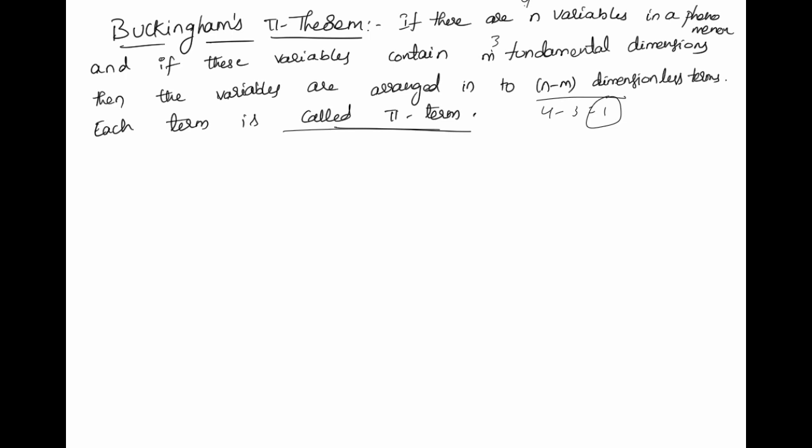After writing the pi terms, we compare the arbitrary constant values on both sides. Since a pi term is dimensionless, its dimensional formula is M⁰L⁰T⁰. We write the pi term in terms of the given variables — such as density or velocity — which have their own dimensional formulas. We compare both sides to find the arbitrary constant values, similar to Rayleigh's method, then substitute all values into the first equation to get the expression for the unknown variable.